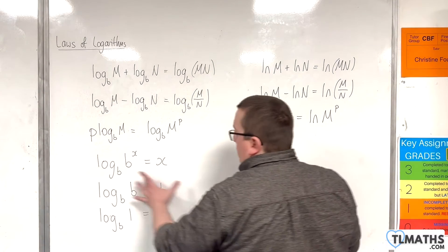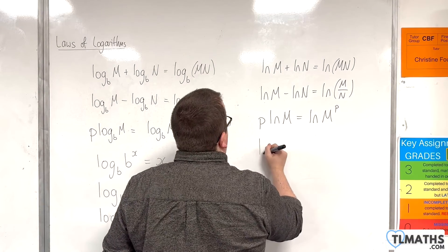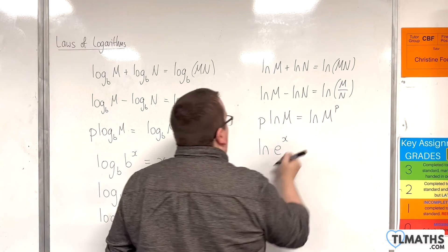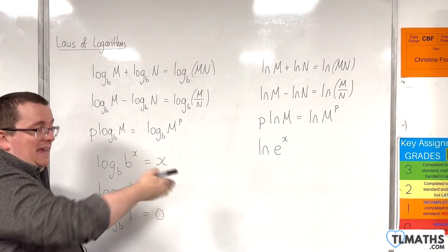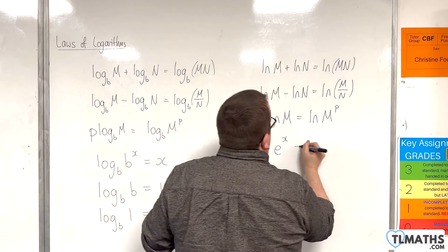Then for this statement, the natural log of e to the x - because remember natural log is log base e - this will be equal to x.